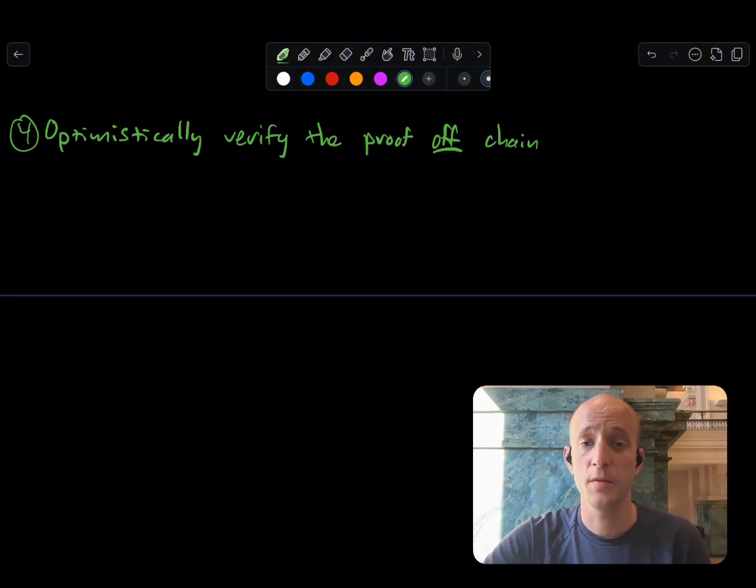So we talked about some of the downsides of doing this optimistic on-chain verification, a la BitVM2. So what did Alpen come up with? Well, it's called Glock, a garbled lock. We'll discuss later in detail how this works, but here's one way to do it.